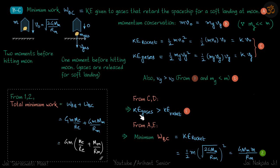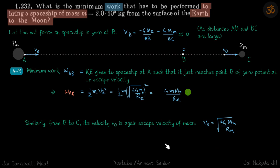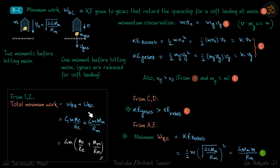The work done during B to C equals the kinetic energy given to the gases. The minimum KE of the gases equals the KE of the rocket, which is (1/2)·m·v₀² = G·m·M_M / R_M. Adding the two work components gives the total minimum work: W_total = G·m·M_E / R_E + G·m·M_M / R_M. This is also the answer — and you can see the energy is the same whether launching from Earth to Moon or Moon to Earth.